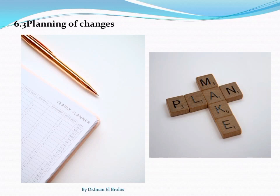The third section is 6.3, planning of changes. It means controlling how food safety management system changes are planned and implemented, including personnel changes. You should take into consideration the purpose of the changes you intend to make, responsibilities and authorities whenever you make changes, the consequences that changes could potentially produce, the availability of resources, and the integrity of your food safety management system whenever you make changes.